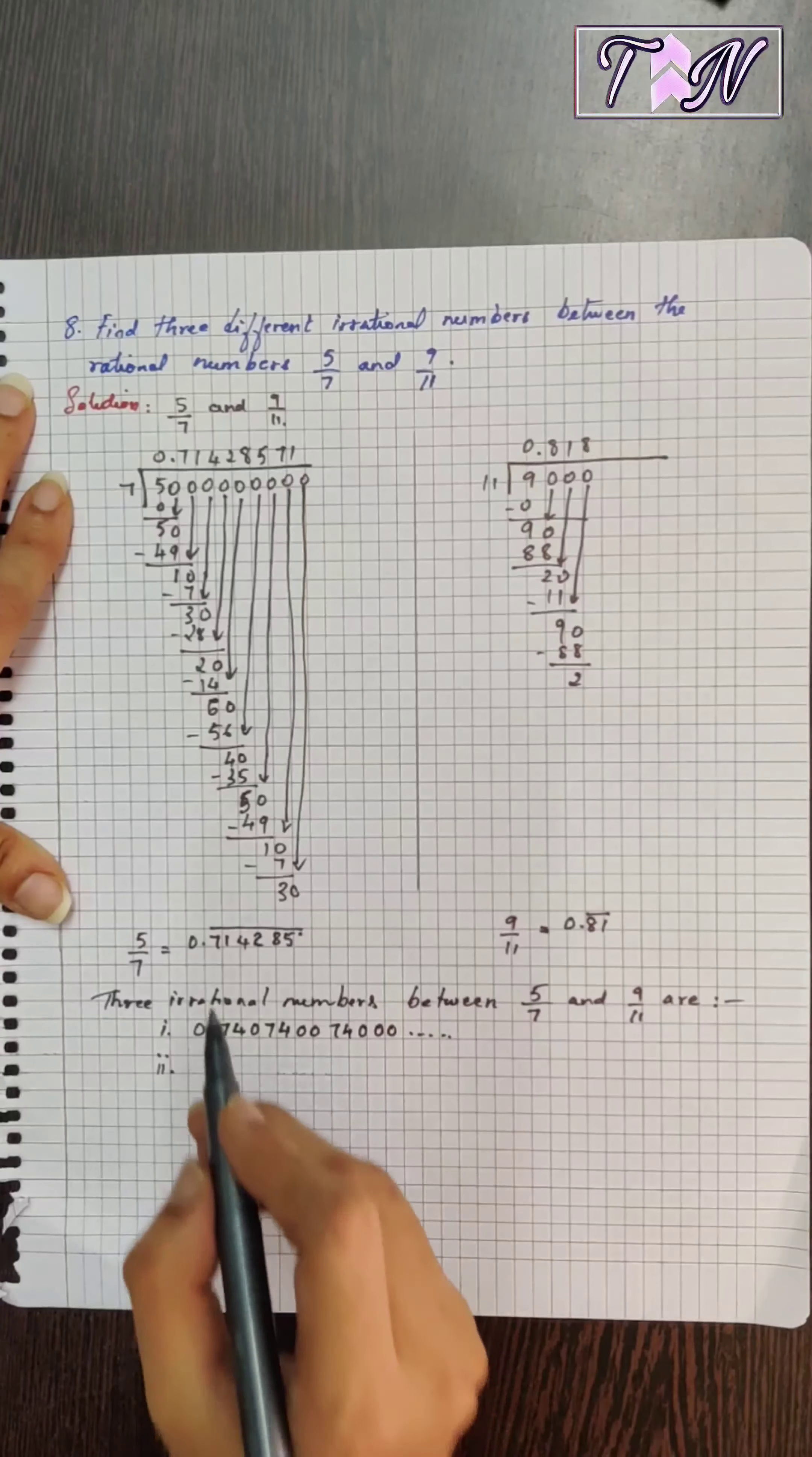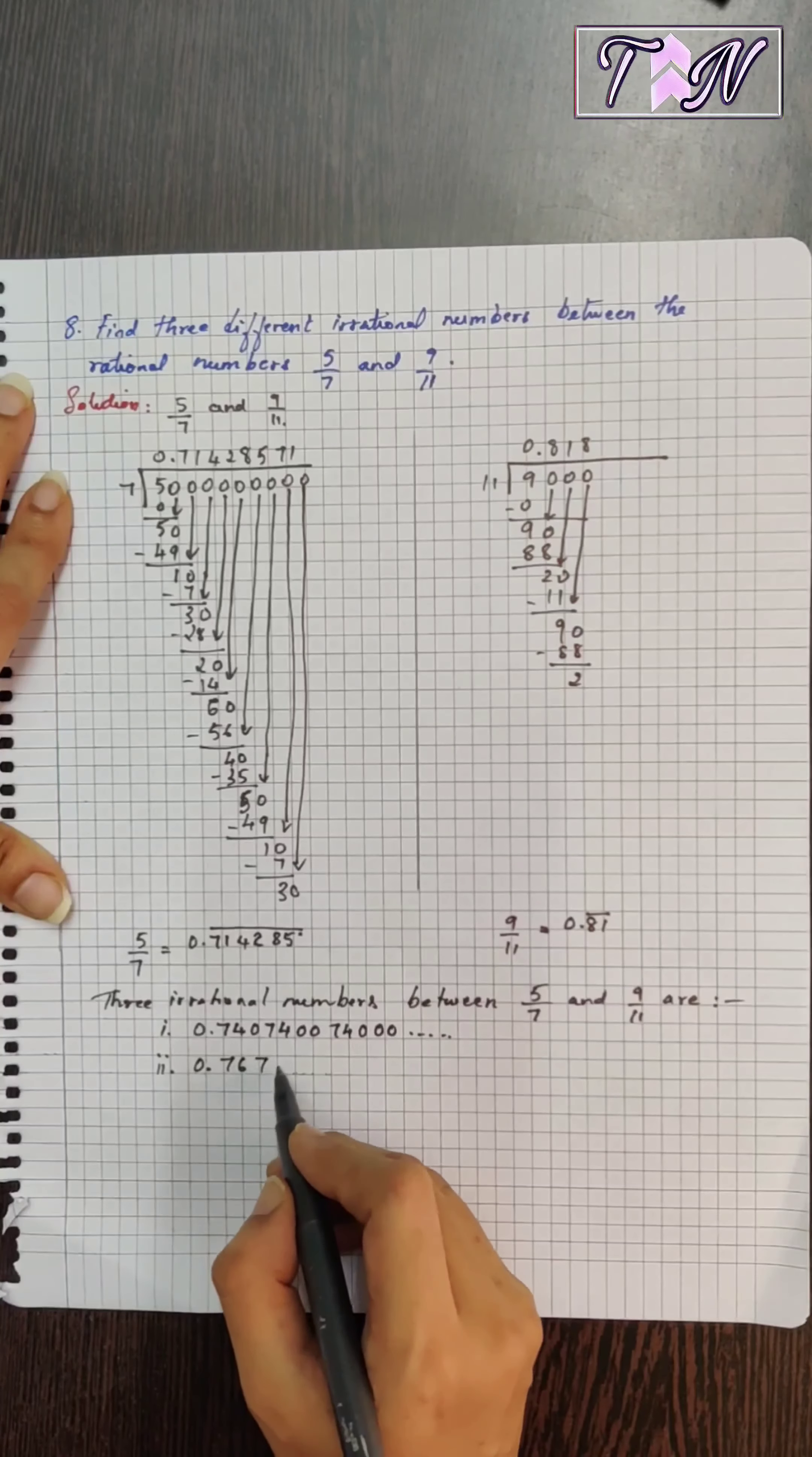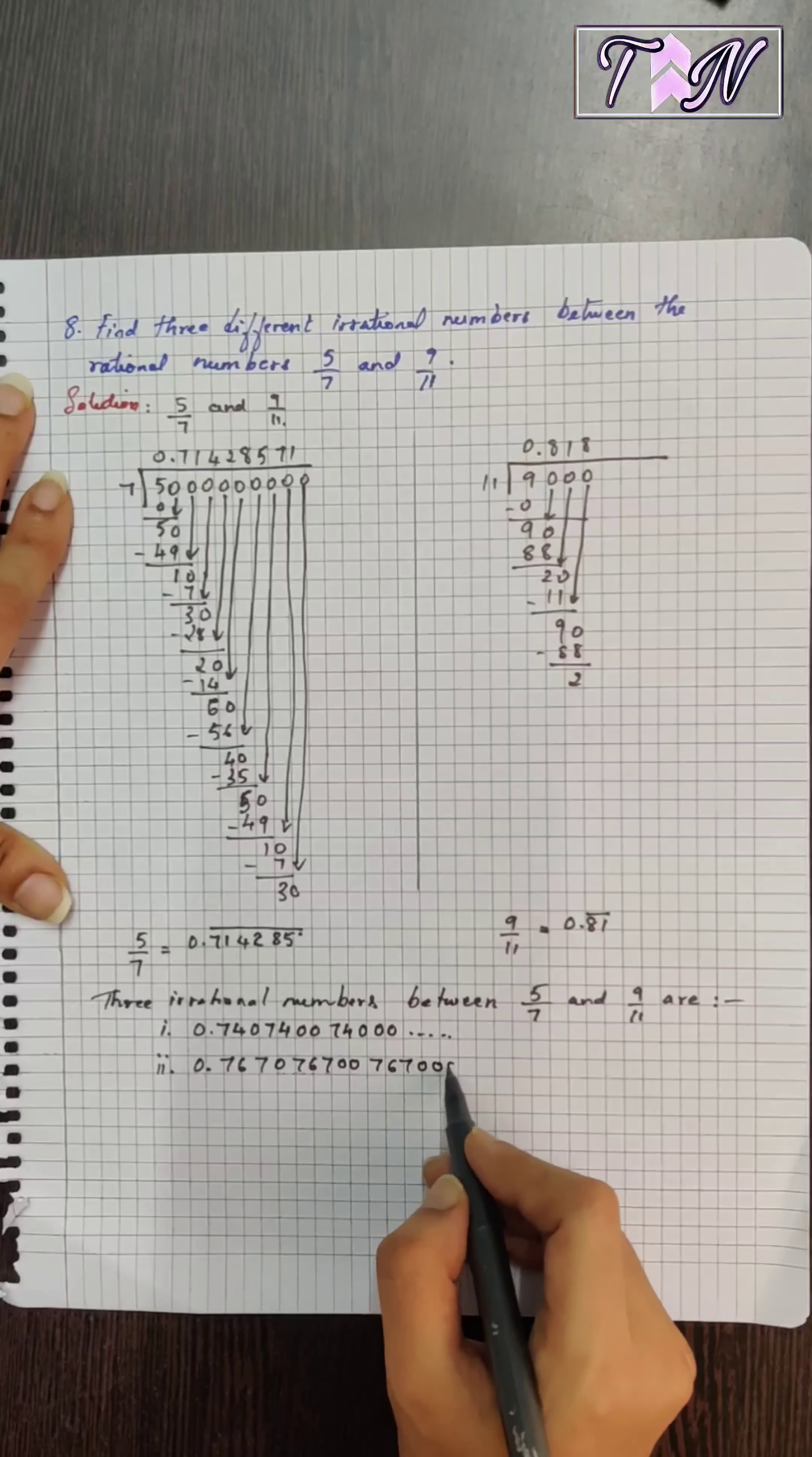Second example, you can take any number between these two decimals. So I'll take 0.7670, 76700, 76700, so on.